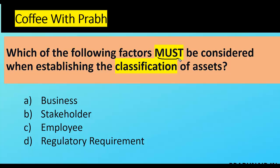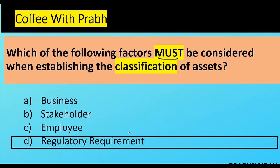Business requirements can be customized; stakeholders can be convinced to change; employees can be managed. But regulatory requirements come from the government and cannot be ignored. For example, in the health sector, PHI data must comply with HIPAA and other regulations — that drives classification. Regulatory requirement is something that cannot be skipped, so the answer is B.